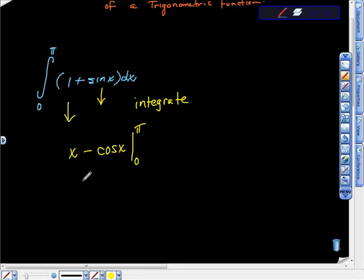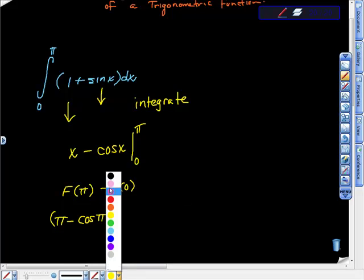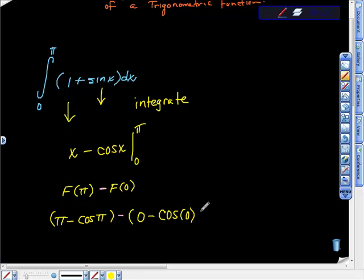Here we have to be really, really careful. So what we're going to do here is this. We're going to take F of pi minus F of 0, and F of pi would be pi minus cosine pi, minus, this minus is this one, F of 0, so that would be 0 minus cosine of 0.